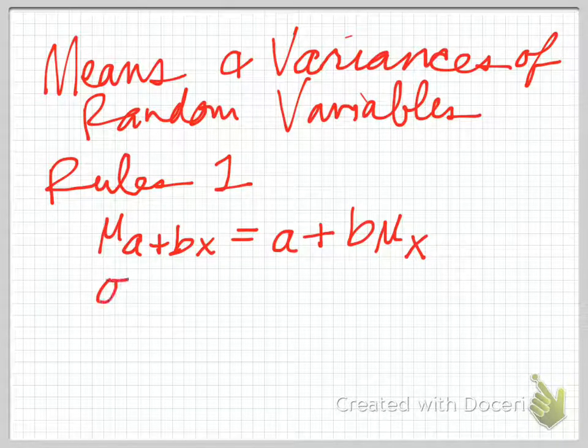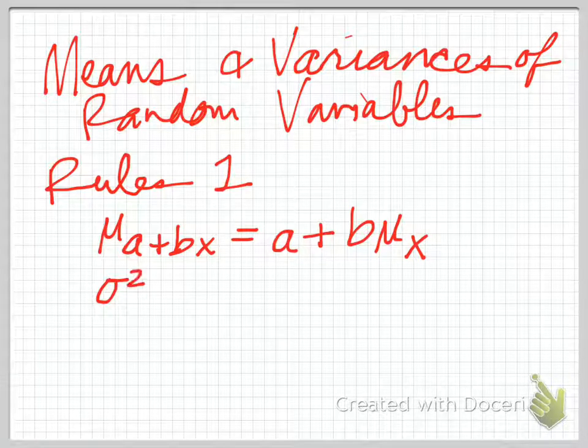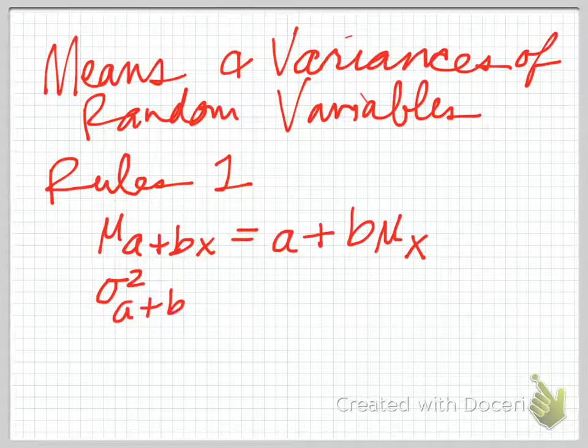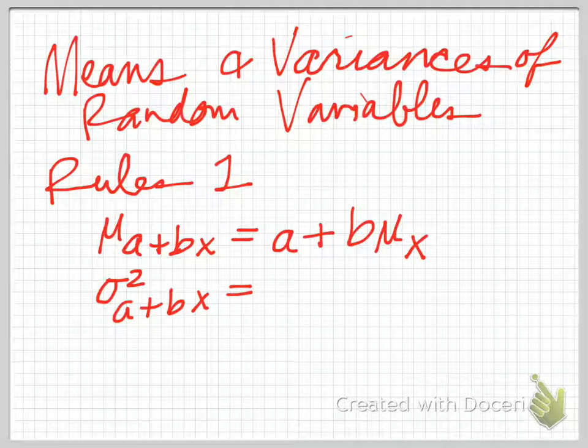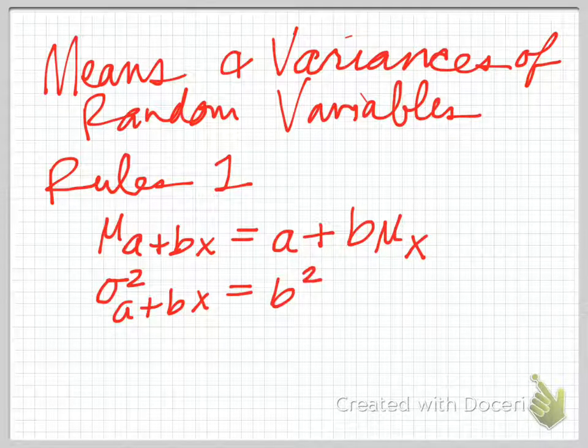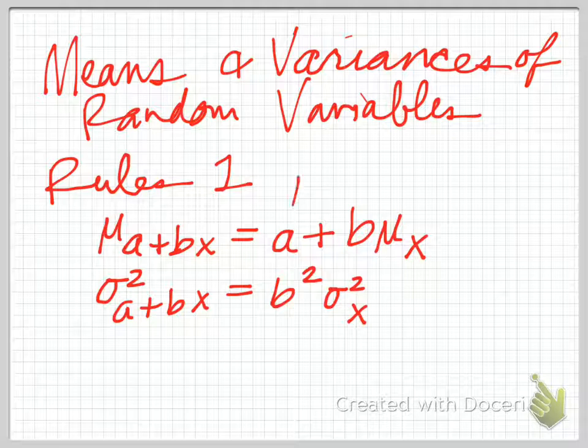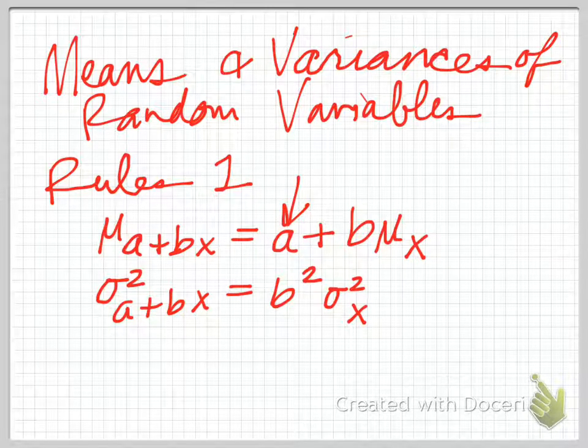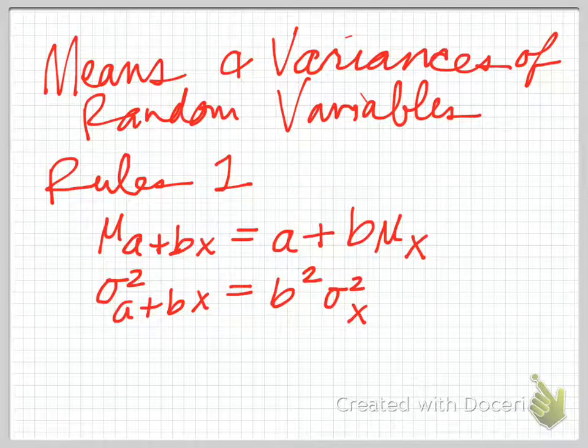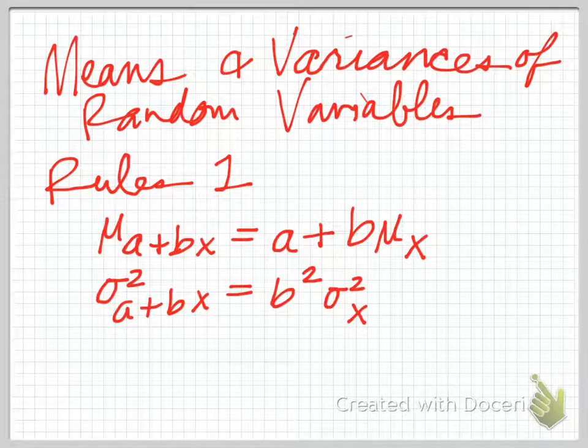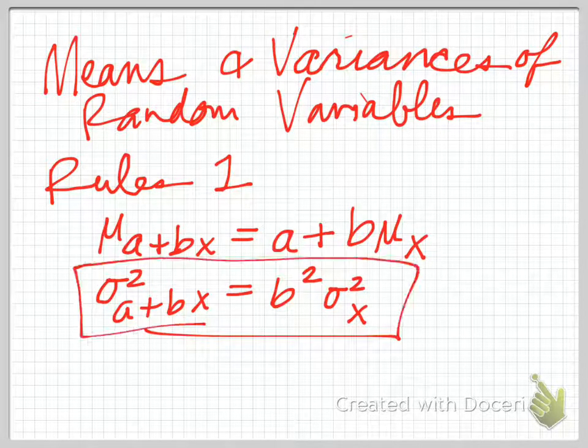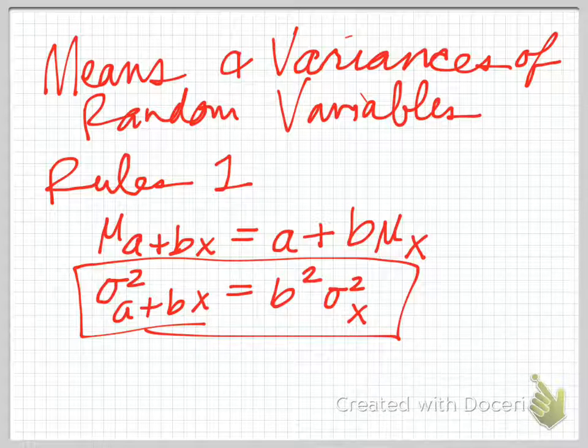With the variance, it's slightly different. We have to pull out something that we talked about in first semester. The variance of a linear transformation is just that constant squared times the variance of the random variable X. Remember from chapter 1 that whatever the A was for a mean matters because that would shift that whole distribution up. For a variance, shifting everything up doesn't change how far it's spread. So when we're looking at variance of a random variable, whatever the A is doesn't matter because it's not going to change that variance.